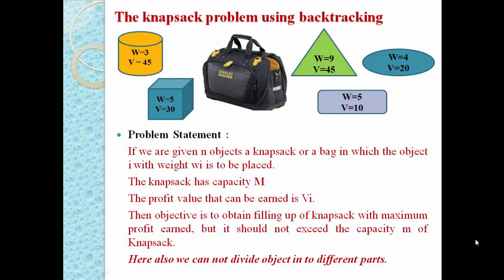First of all you must understand what is the Knapsack problem. As per the problem statement, suppose we have one Knapsack — a bag — and we have a number of objects. Every object has some weight and value. For example, one object has weight 3 units and value 45; another has weight 5 units and value 30. We have to fill all the objects inside this Knapsack, but it has a capacity constraint M. Our Knapsack can carry a maximum of M units of weight, so the total weight must be less than or equal to M.